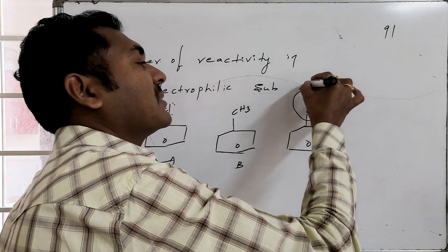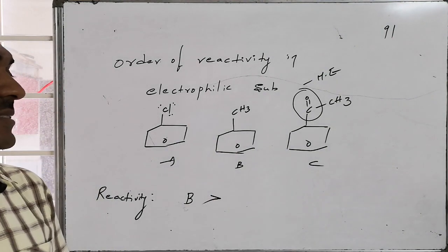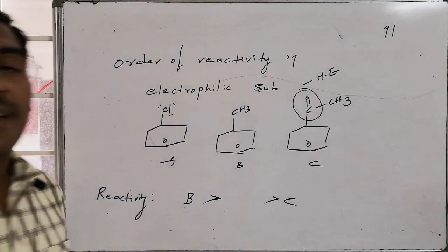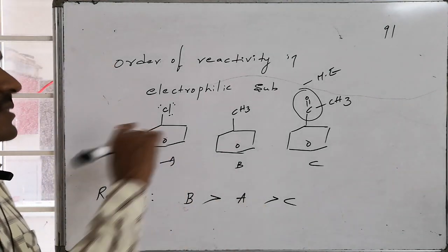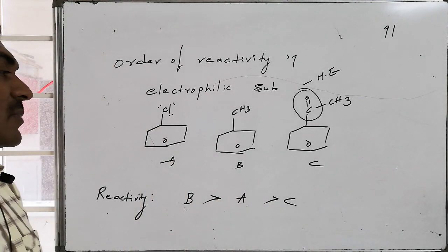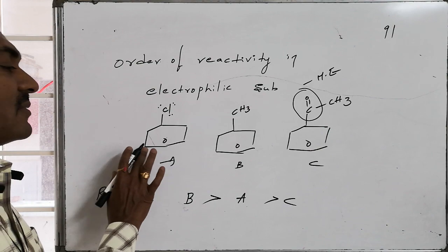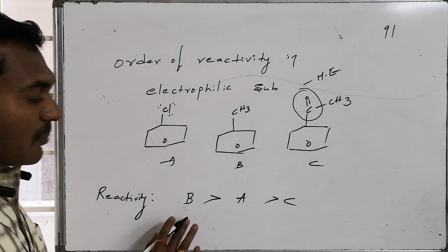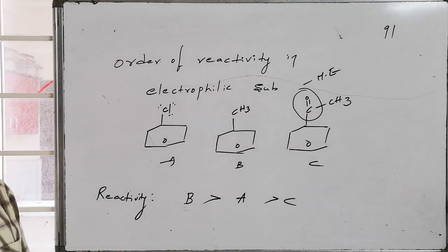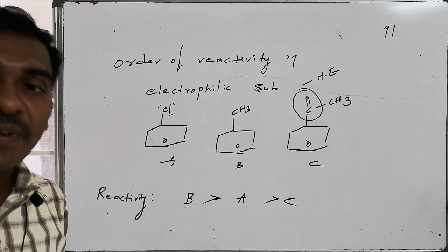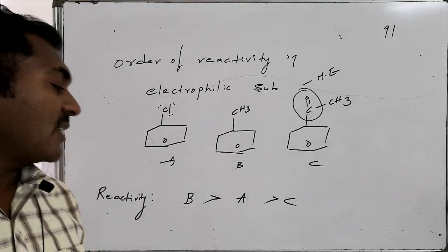The acyl group is a minus-M (electron-withdrawing by resonance) group — it decreases electron density on the benzene ring considerably, making C the least reactive. Chlorobenzene (A) has lone pairs and is an ortho/para director, but due to its electron-withdrawing inductive effect it decreases electron density — so its reactivity is lower than methylbenzene but higher than the minus-M containing acylbenzene. Therefore the order of reactivity in electrophilic substitution is B (methylbenzene) > A (chlorobenzene) > C (acylbenzene).